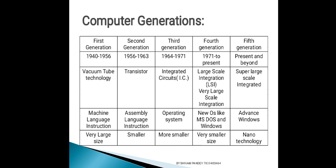Third generation computer में transistor को replace किया गया integrated circuits के द्वारा — integrated circuits यानि small silicon ICs होते थे। Third generation में operating system का evolution हुआ और ये और भी छोटे हो गए।